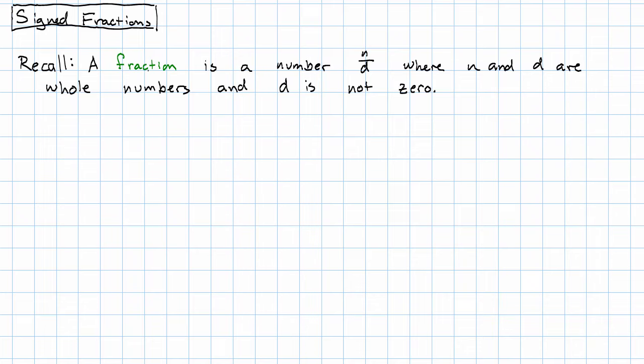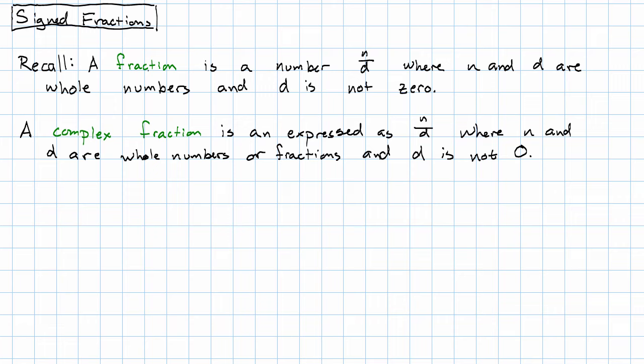We have one more thing that sometimes comes up when we go to write down a fraction from an application. Sometimes when we write down fractions, we see what are called signed fractions. Remember that in a fraction, the numerator and denominator are whole numbers, and the denominator is not zero. In a complex fraction, the numerator and denominator are allowed to themselves be fractions. In a signed fraction, the numerator and denominator are allowed to be any integers, including negative ones.